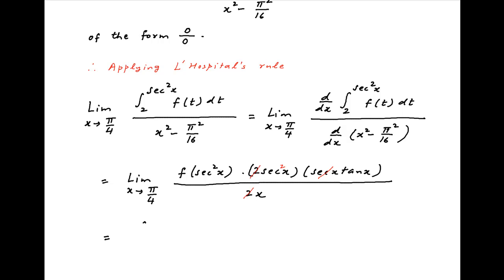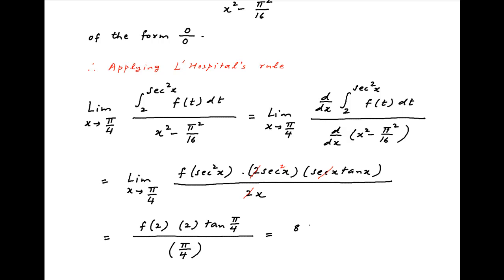Now the value of sec²x when x tends to π/4 is equal to 2, and so the value of this limit equals f(2) times 2 times tan(π/4), divided by π/4. Since tan(π/4) = 1, this simplifies to 8/π · f(2), which is the required answer.